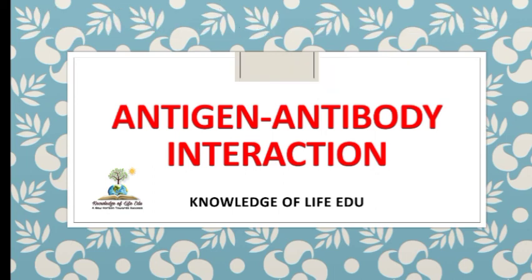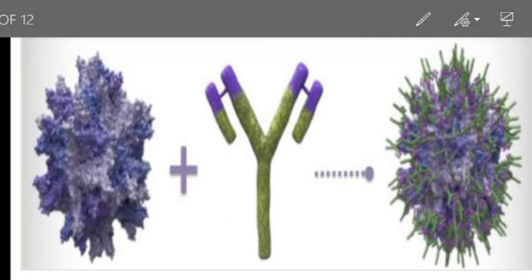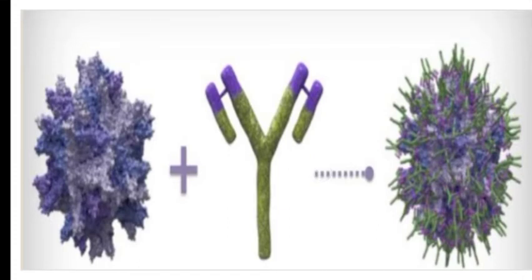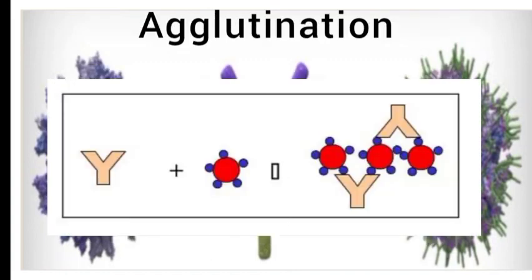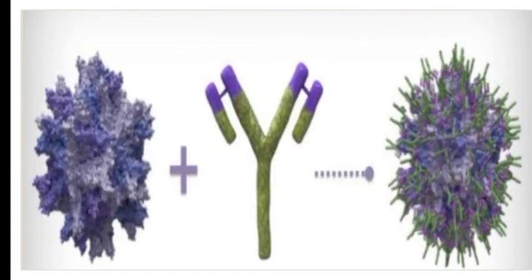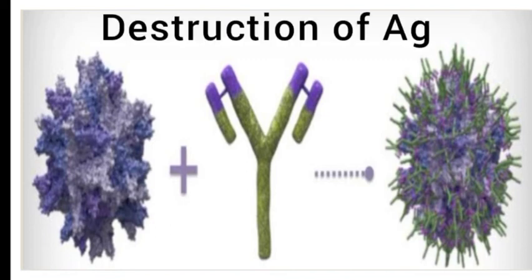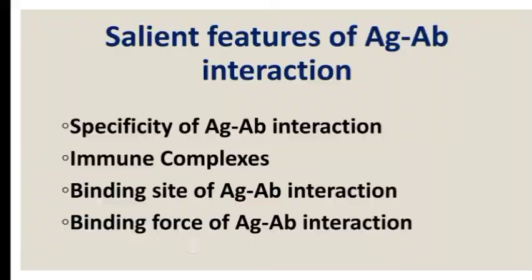The antigen-antibody reaction occurs in three stages. The first stage involves formation of the antigen-antibody complex. The second stage leads to visible events like precipitation reactions, agglutination, and other reactions. The third stage includes destruction of the antigen-antibody complex or its neutralization.